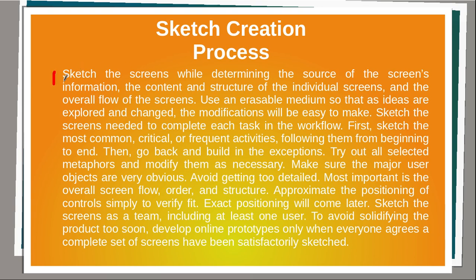Sketch the screens while determining the source of the screen's information, the content and structure of individual screens and the overall flow of the screens. Use an erasable medium so that as ideas are explored and changed, modifications will be easy to make. Sketch the screens needed to complete each task in the workflow. First sketch the most common, critical or frequent activities, following them from beginning to end. Then go back and build in exceptions. Try out all selected metaphors and modify them as necessary. Make sure the major user objects are obvious. Avoid getting too detailed — most important is the overall screen flow, order and structure. Approximate the positioning of controls simply to verify fit; exact positioning will come later. Sketch the screen as a team including at least one user. Develop online prototypes only when everyone agrees a complete set of screens has been satisfactorily sketched.